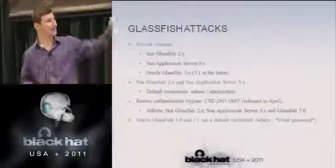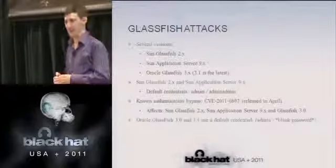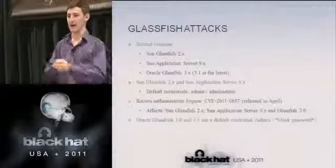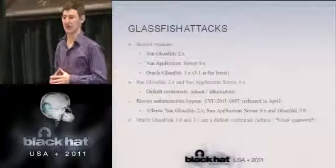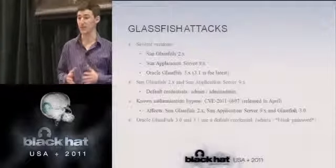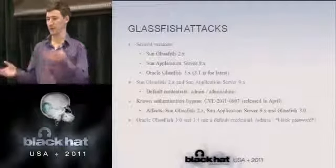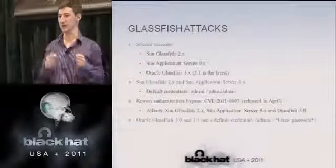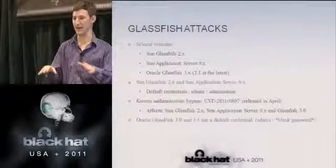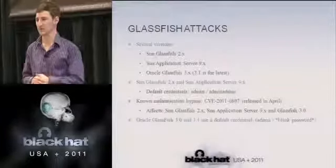Looking at attack targets, there are several different versions: Sun Application Server 9.x and older versions like Sun GlassFish 2.x, which were vulnerable to several different attack vectors. One was published in April of this year — an authentication bypass where all you had to do was transmit a GET request using a lowercase 'get' or lowercase 'post' to bypass authentication. It's a noted CVE that was released to the industry.